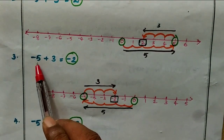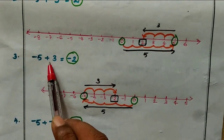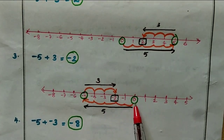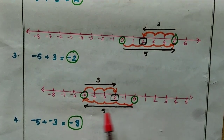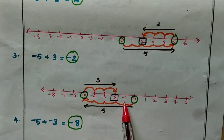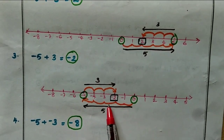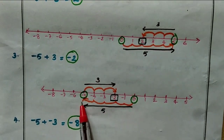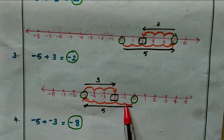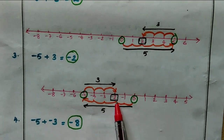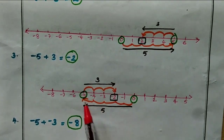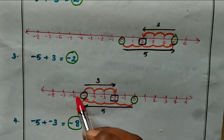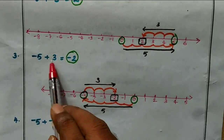Question number 3: minus 5 plus 3 equals dash. Start from 0 and move left to position 5 — that is 1, 2, 3, 4, 5 to the left. This is the position of minus 5. Now add positive 3, so move right 3 steps: 1, 2, 3.